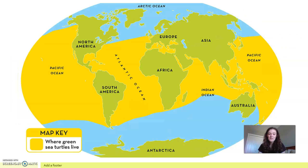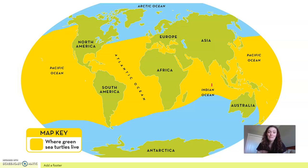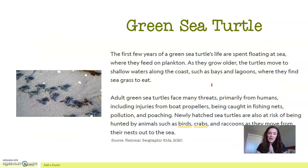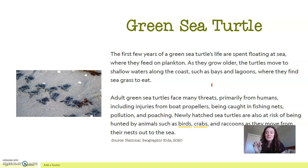I thought this map was awesome — I got this off of National Geographic Kids, which is where I get most of my content for my videos. The yellow represents everywhere where green sea turtles live, so we can see that they live in the Pacific, Atlantic, and Indian oceans. They're just everywhere — except the Arctic oceans, they're found in every single ocean on the planet, which is just amazing. The first few years of a green sea turtle's life are spent floating at sea where they feed on plankton — that really microscopic crustacean-like creature we learned about when we learned about whales.